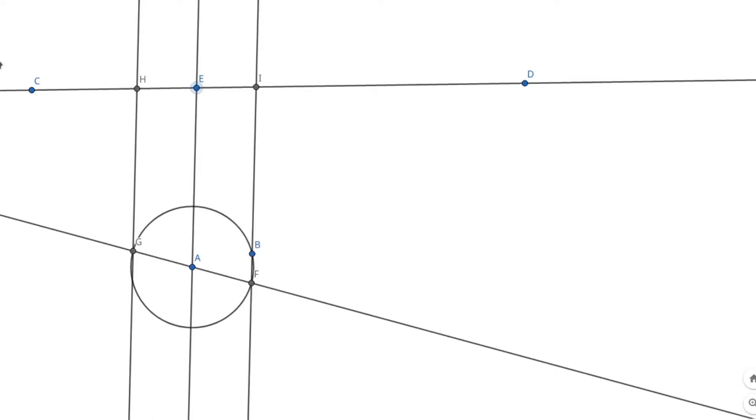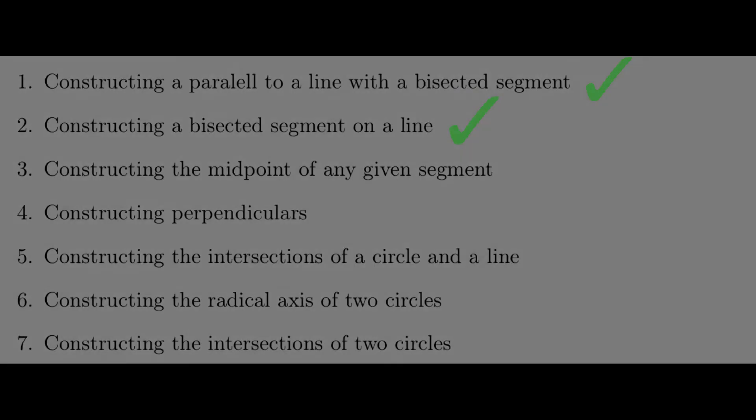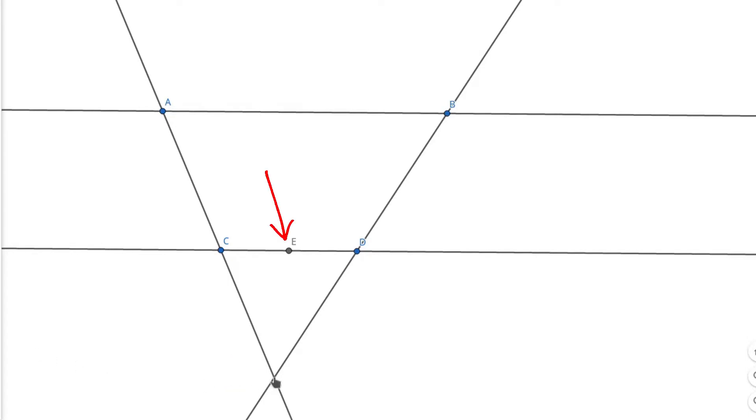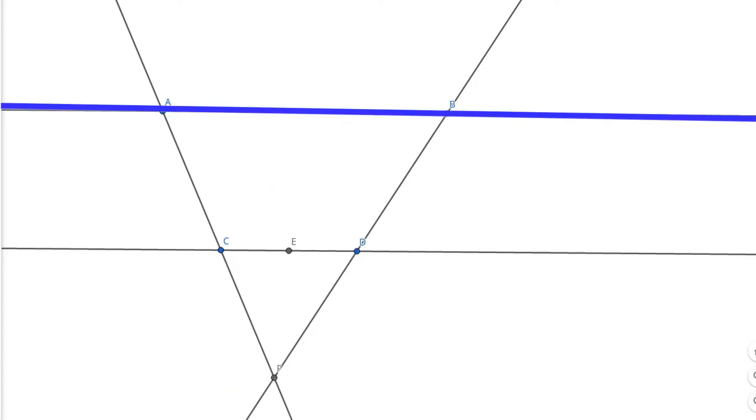This can be proved using the basic proportionality theorem. Now we will see how to bisect any given segment. Here we have two lines: one with a bisected segment of any size which we constructed by the method we just saw, and one with a segment on it which we want to bisect. So we connect the corresponding endpoints and find a point of projection, using which we can project the midpoint that we already have onto the required line. This is an important concept and we are going to use it later, so remember.